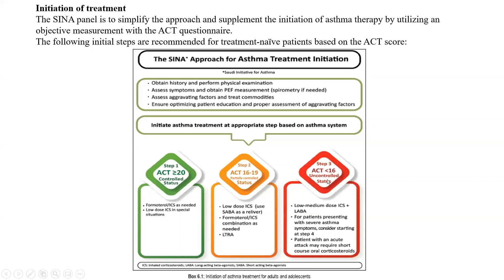The final category is uncontrolled asthma, where we have a variety of options. Here we can give low to medium dose of inhaled corticosteroid with a long-acting beta agonist. For patients presenting with severe asthma symptoms, consider starting step four. For patients who have poorly uncontrolled asthma at presentation, initiate treatment with medium dose inhaled corticosteroid and long-acting beta agonist.